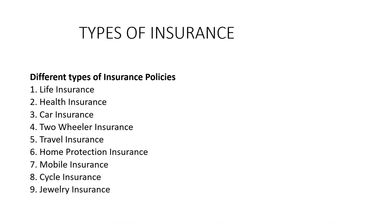Now we start the types of insurance. Generally, various types of insurance policies are there, but the main policies are: first is life insurance, second is health insurance, third is car insurance, fourth is two-wheeler insurance, fifth is travel insurance, sixth is home protection insurance, seventh is mobile insurance, eighth is cycle insurance, and ninth is jewellery insurance.